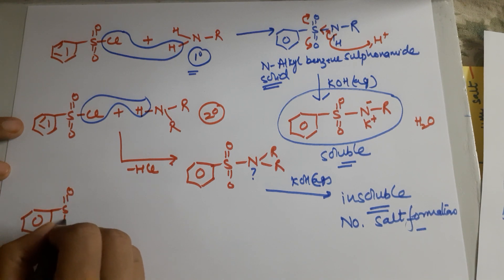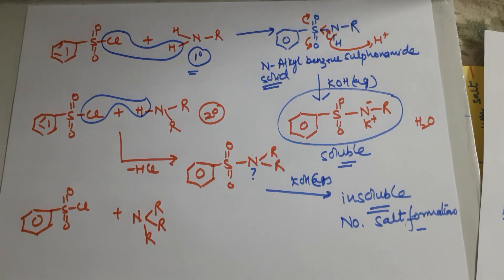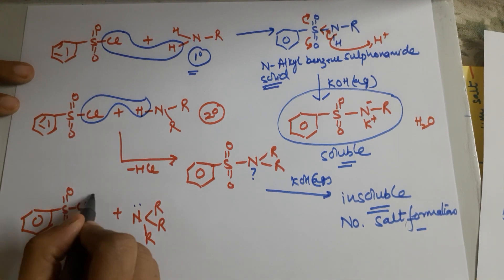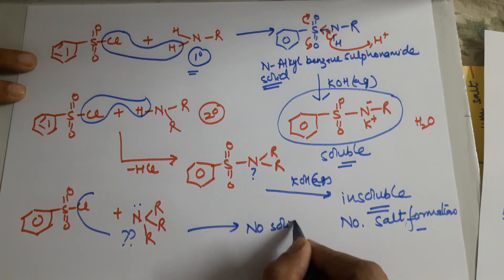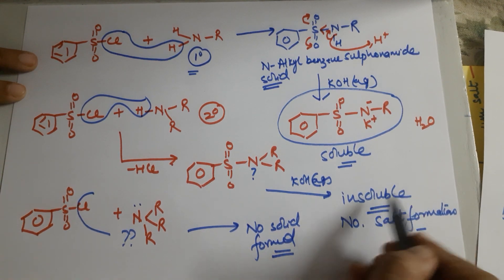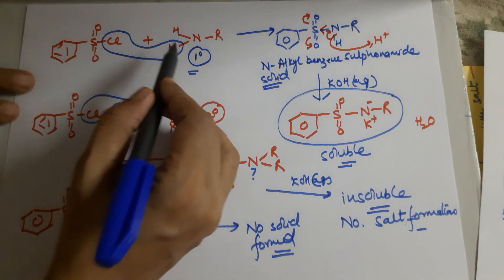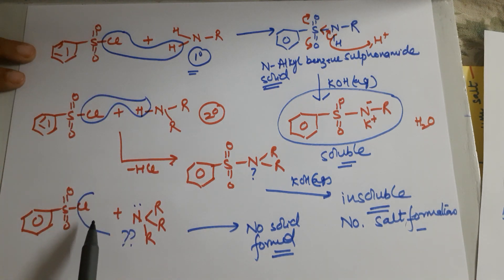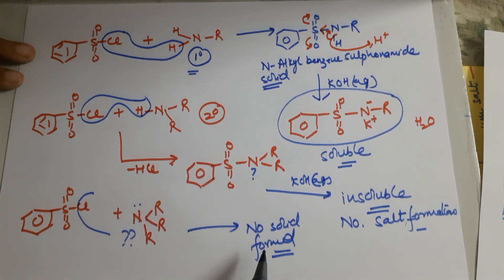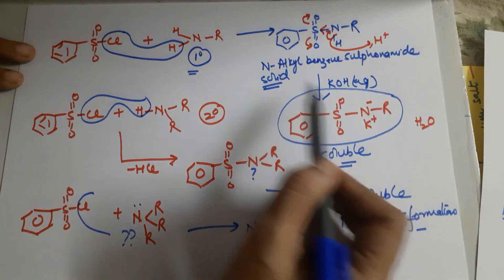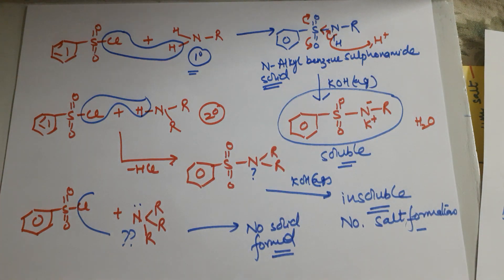Moving to the third: benzene sulfonyl chloride reacts with a 3rd degree amine. The agenda was that H and Cl must be removed. Cl is there but H is not. So there is no solid formed. With primary and secondary amines you get a white solid, but with 3rd degree amine you get no precipitate. After adding aqueous KOH, 1st degree dissolves and becomes soluble while 2nd degree remains insoluble in the residue.